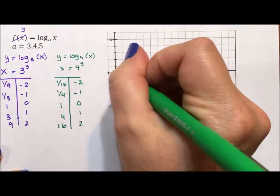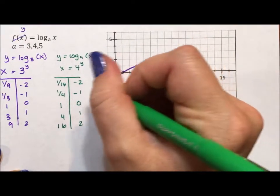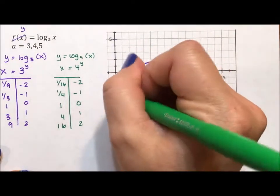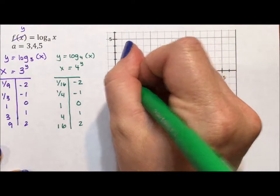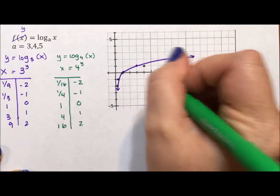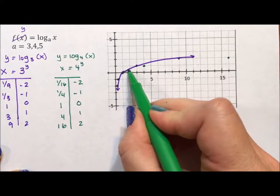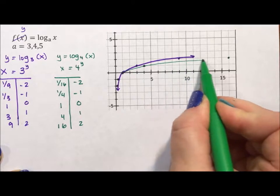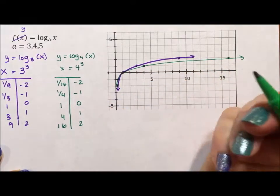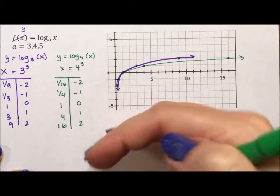So now we have 1 16th negative 2, which is closer to the x-axis here. Here we have 1 4th, closer to the y-axis here. 1, 0 is the same point, 4, 1, closer to the x-axis, 16, 2. So on this side we have our smooth continuous graph, and on this side we have our smooth continuous graph, and it just kind of rotated towards the two axis.